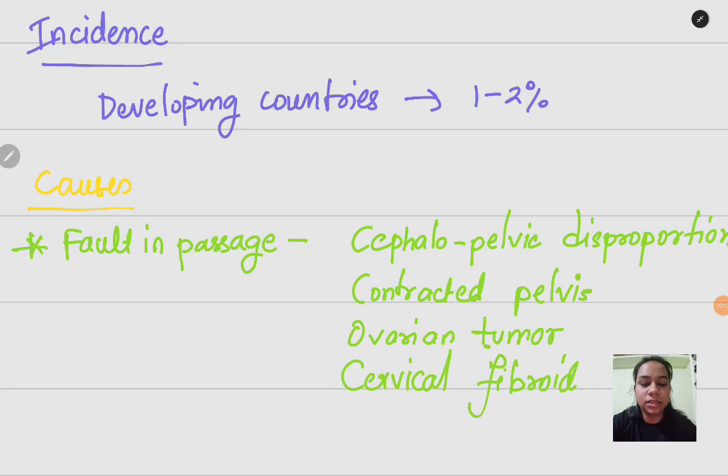Next is if mother is having any ovarian tumor. If that tumor is large in size, it can obstruct the passage and the labor process will become problematic. Next is cervical fibroid. Same like tumor, cervical fibroid cases may have the same problem.